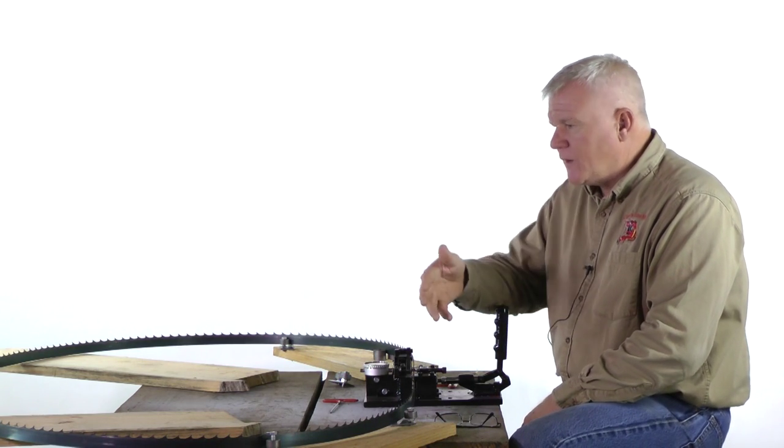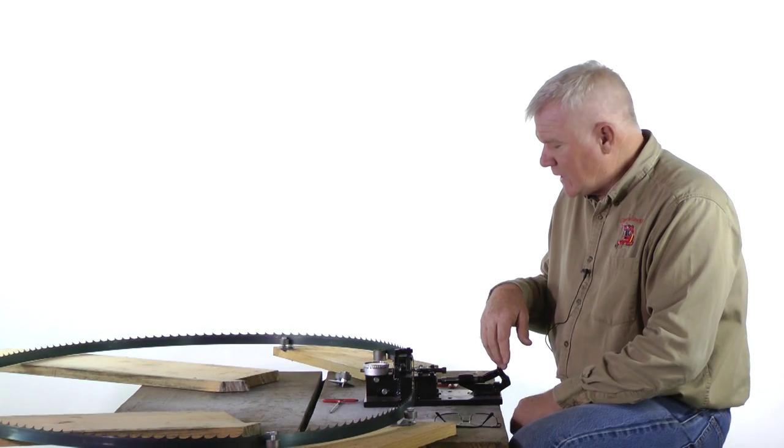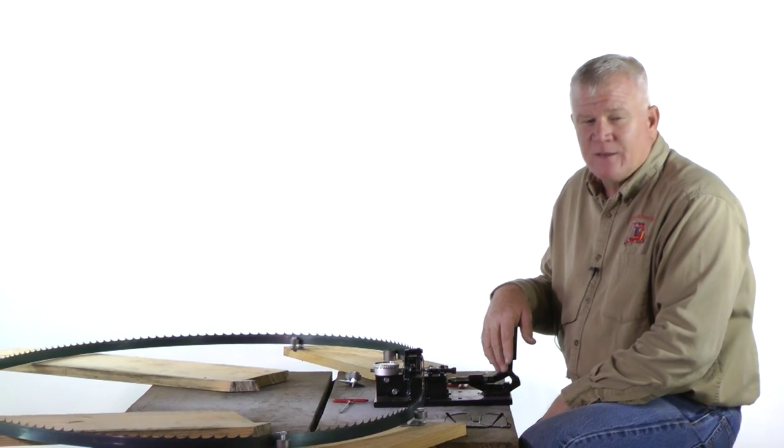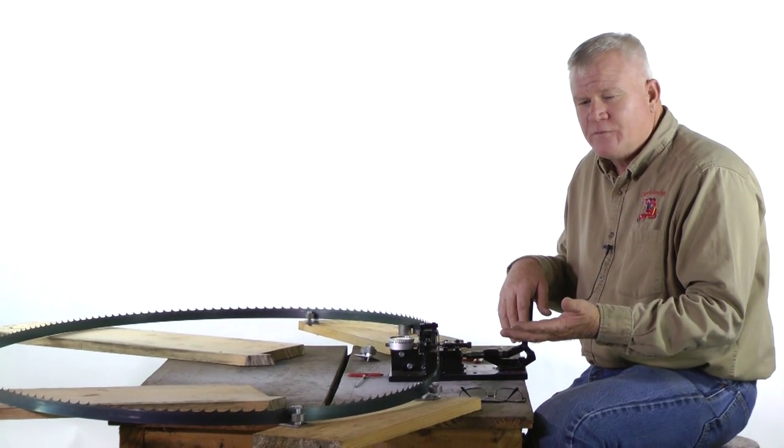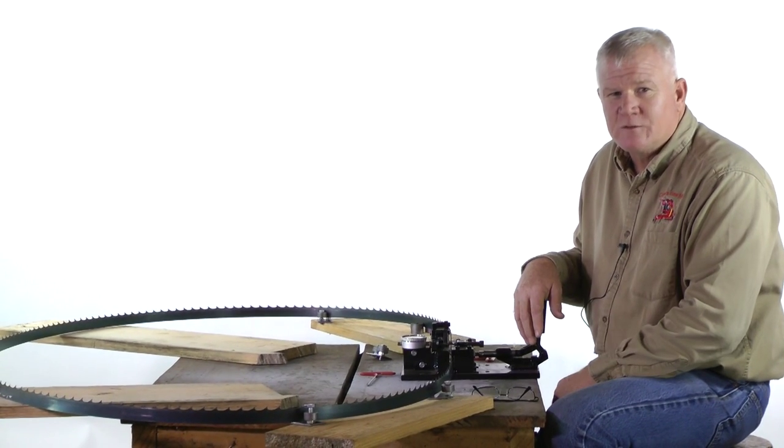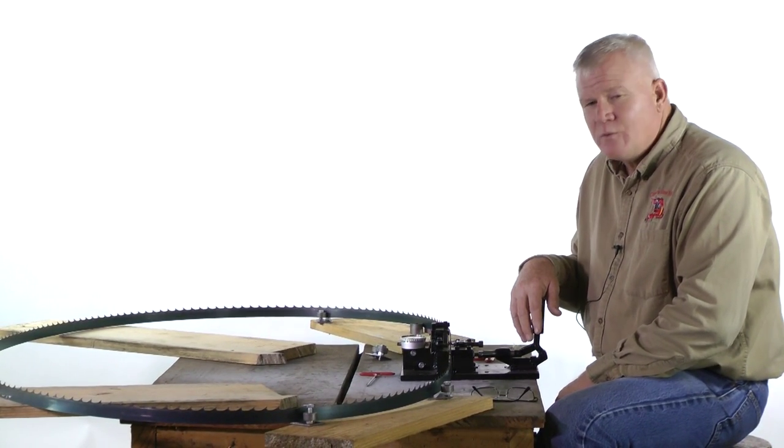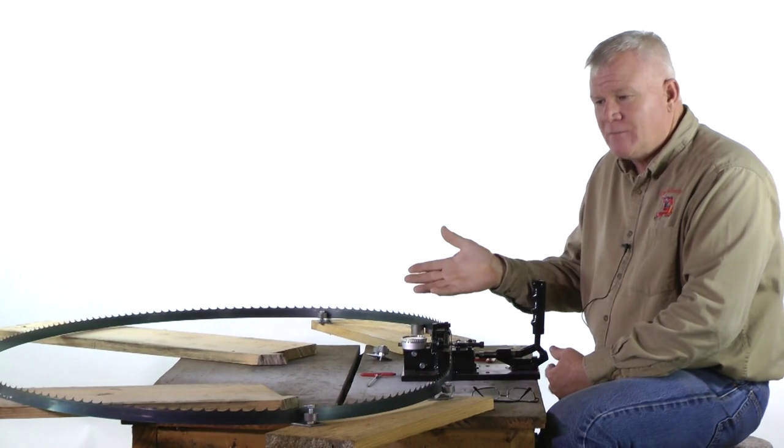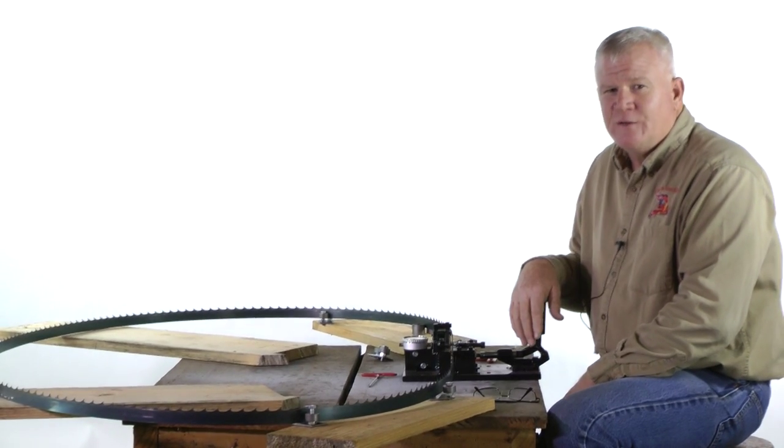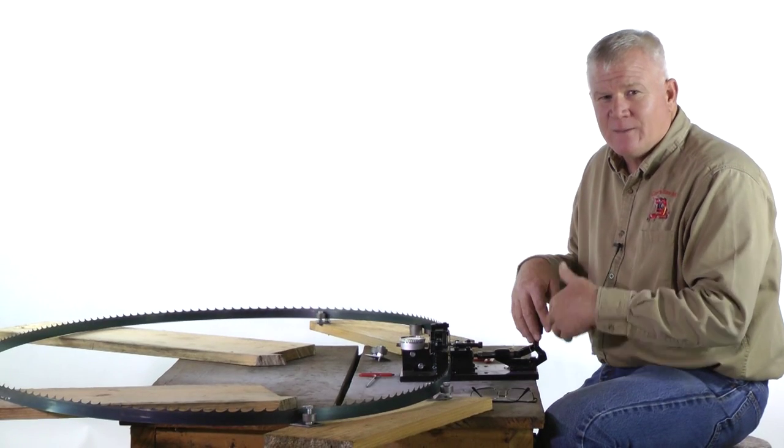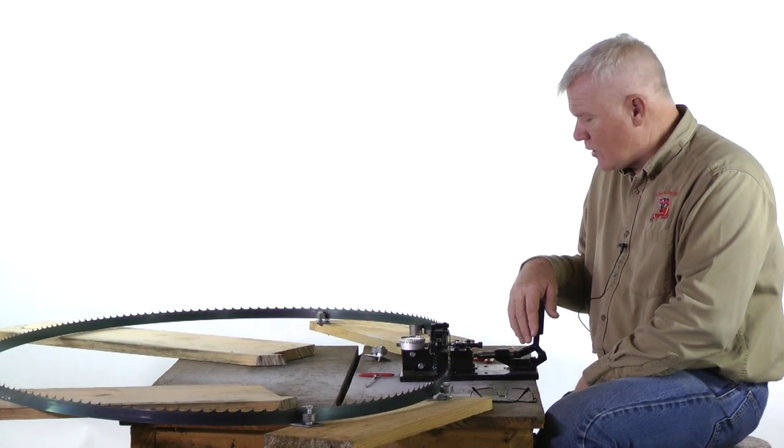In general, a blade that's around 14 feet long will take you around eight minutes to set. About four minutes on one side, four minutes on the other. That same blade is going to run around 15 minutes on the sharpener if you go around it three times, about five minutes around on the sharpener.